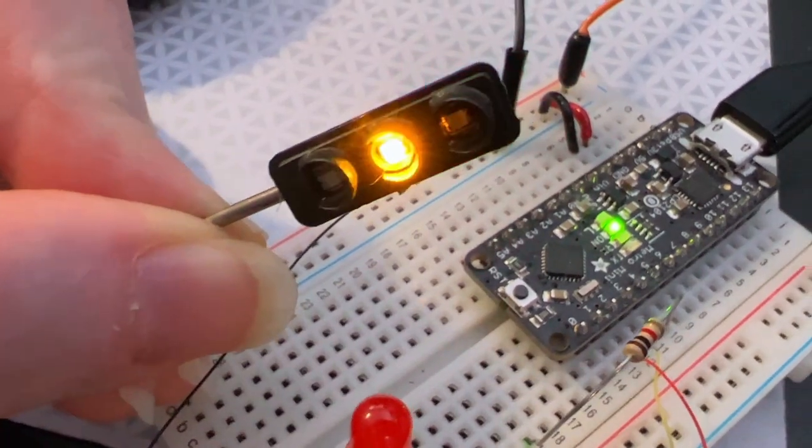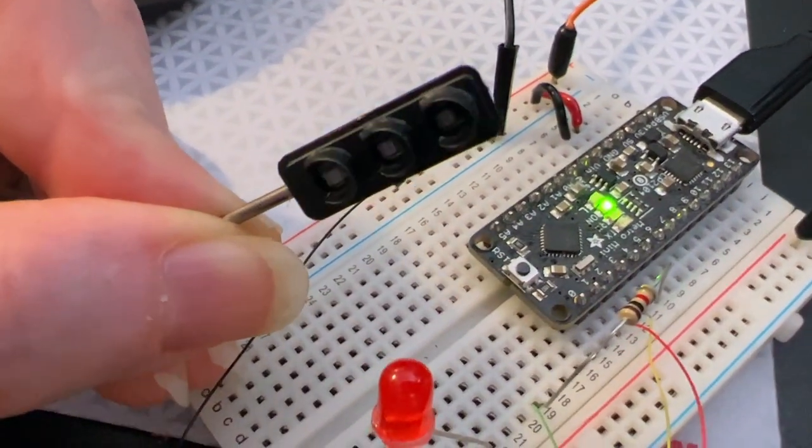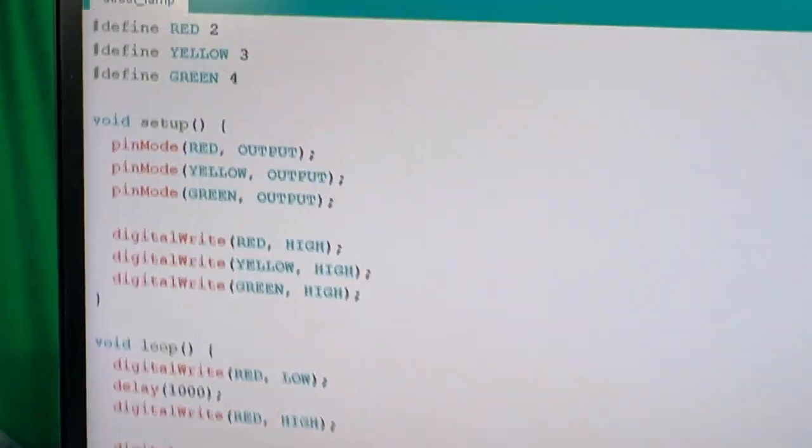The black wire goes to plus 5 volts, and then you just connect red, yellow, and green to digital I/O. And then I've got a little bit of Arduino code just to test it out.